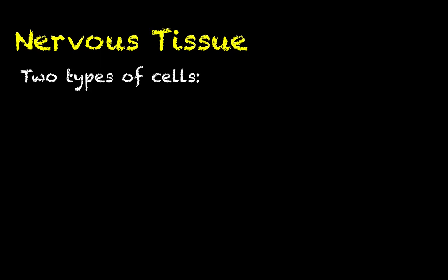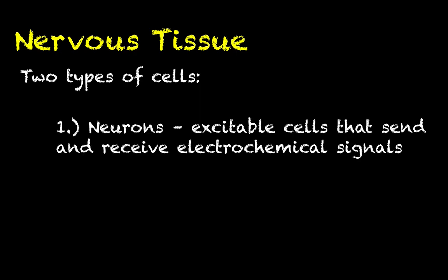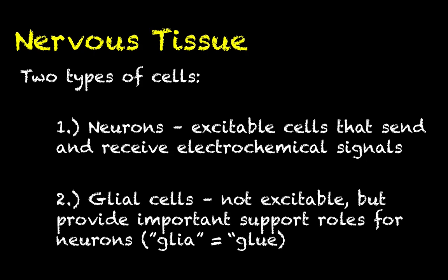As far as nervous tissue goes, there are two major types of cells. Number one, clearly, are the neurons — these are excitable cells that send and receive electrochemical signals throughout the body. In a minute we will clarify what we mean by the word excitable. Secondly, you have what are called the glial cells. These are not excitable and they do not send and receive signals in the same way that neurons do, but they do provide a lot of important supporting roles for the neurons.